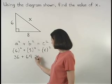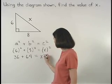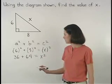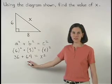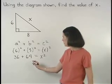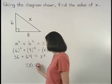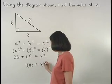So we have 36 plus 64 equals x squared. 36 plus 64 is 100, so we have 100 equals x squared.